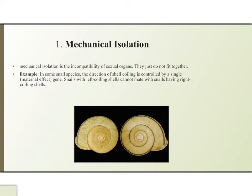The first type is mechanical isolation. Mechanical isolation is the incompatibility of sexual organs — they just do not fit together. As an example of mechanical isolation, in some snail species the direction of shell coiling is controlled by a single gene.